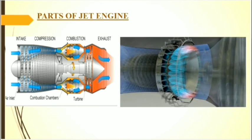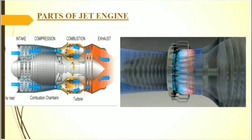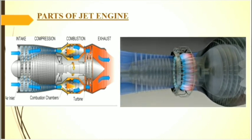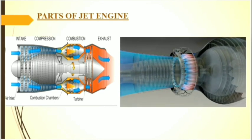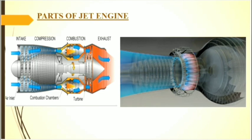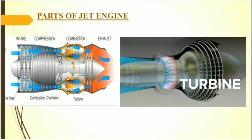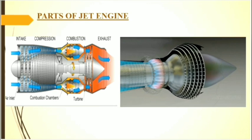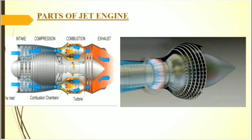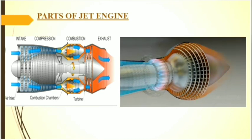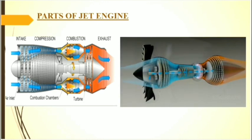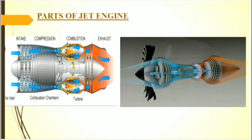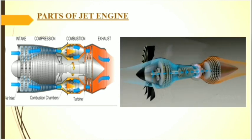During combustion, this action permits rapid mixing and prevents flame blowout by forming a low velocity stabilization zone, which acts as a continuous pilot for the rest of the burner. Gases resulting from combustion have a temperature of approximately 1900 degrees Celsius. Before entering the turbine, these gases must be cooled to about half of this value.